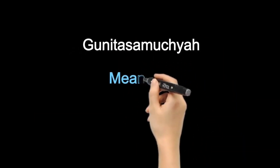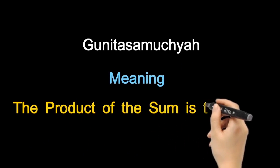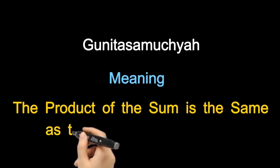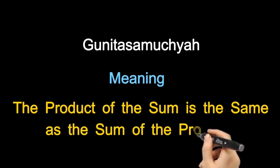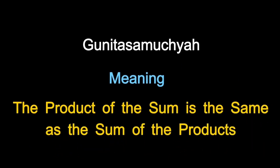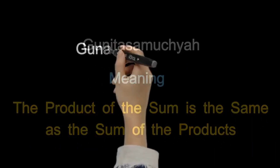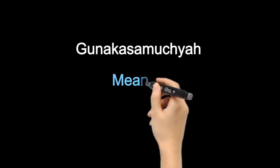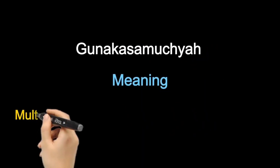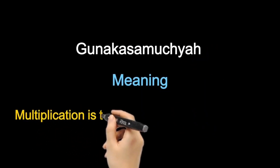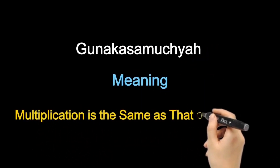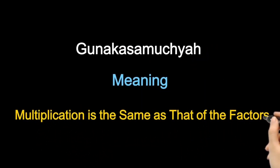Gunitasamuchya, meaning the product of the sum is the same as the sum of the products. Gunakashamuchya, meaning multiplication is the same as that of the factors.